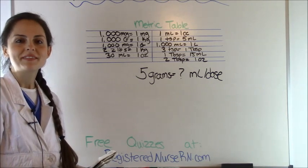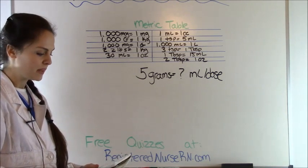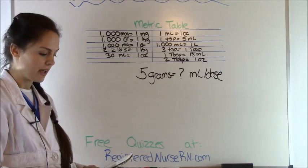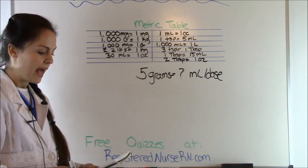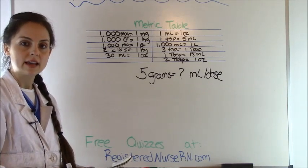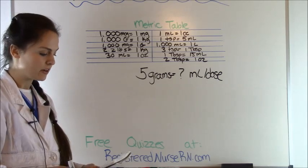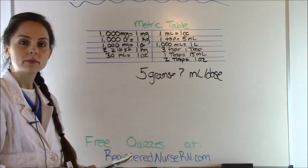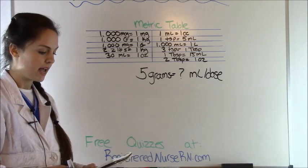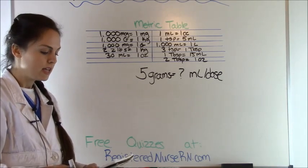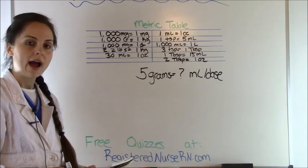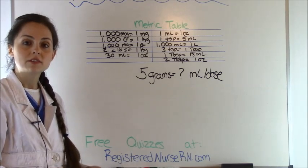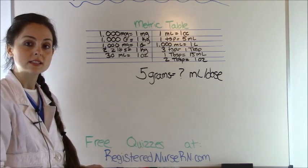In problem one, the doctor has ordered lactose five grams by mouth twice a day. The pharmacy gives us a little container with 40 grams equaling 30 mL — so for every 30 mL there's 40 grams. The doctor only ordered five grams, so we need to know how many milliliters we're going to administer per dose. We're going to use dimensional analysis to solve.